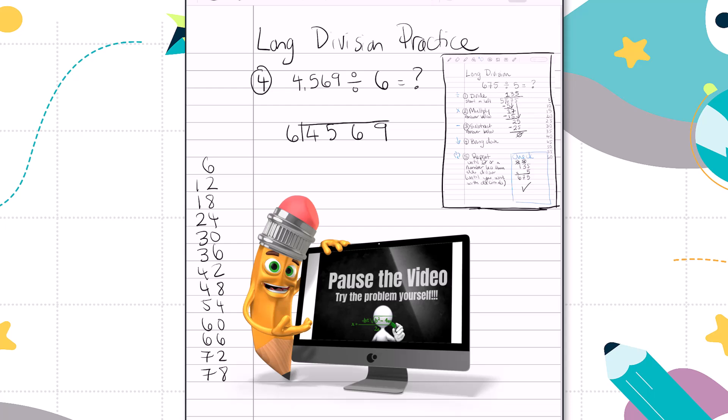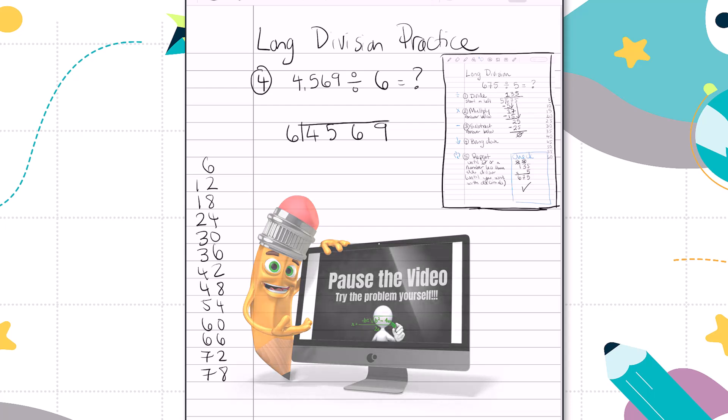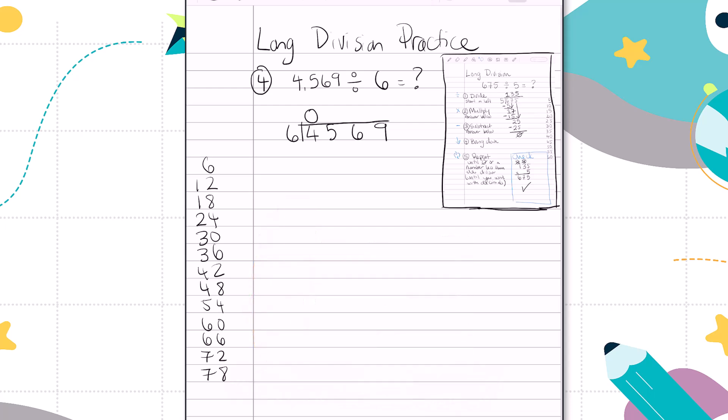And now I'd like you to pause the video and try the problem yourself. Okay. 4 divided by 6. Zero steps. 4 minus 0 is 4. Bring down our next number. That gives us 45. Let's see how many times we can go. 1, 2, 3, 4, 5, 6, 7. Oh, too many. So 7.